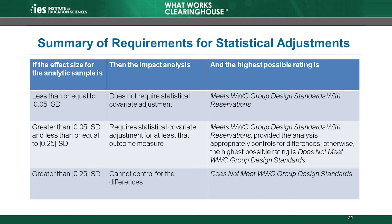Effect sizes greater than .05 standard deviations and less than or equal to .25 standard deviations require statistical covariate adjustment. If the study uses an acceptable statistical adjustment, then it can meet WWC group design standards with reservations.